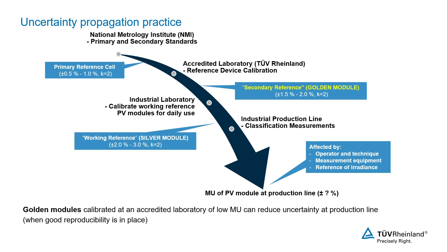These modules then will be given to the industry where the manufacturers will calibrate their own working — or silver — modules that will be used for the calibration of solar simulators in production. The measurement uncertainty propagates or increases for every additional measurement from the source of the calibration chain down to the final production line measurements.